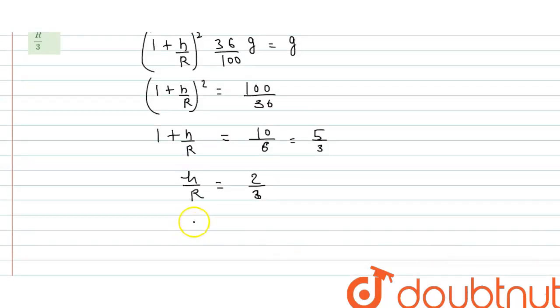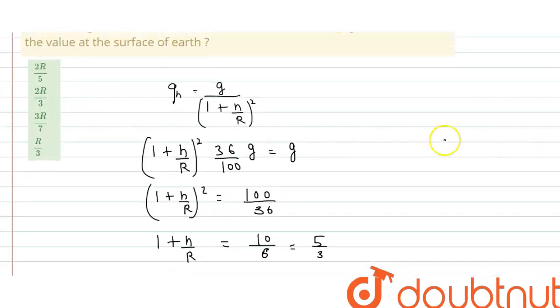So h equals 2 by 3 r. The correct option is 2 upon 3 r, option b. I hope you have understood this explanation. Thank you.